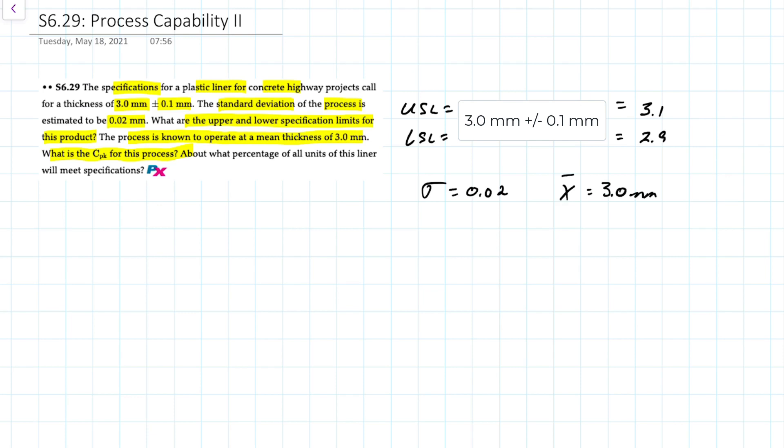We're asked to calculate the CPK but we might as well calculate the CP as well. The CP is equal to the upper specification limit minus lower specification limit divided by six standard deviations. So 3.1 minus 2.9 divided by 6 times 0.02. That gives you 1.67.